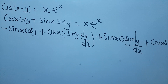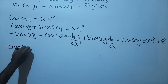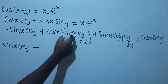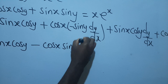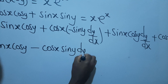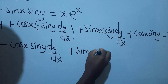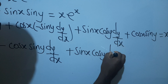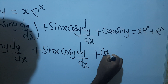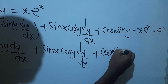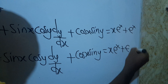Collecting all the differentiated terms, we get: negative sin x·cos y minus cos x·sin y·dy/dx, plus sin x·cos y·dy/dx, plus cos x·sin y — all equal to x·e^x plus e^x.